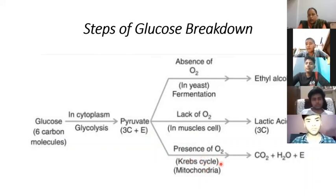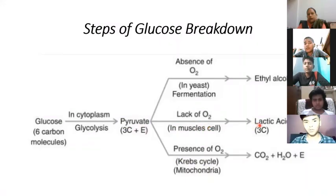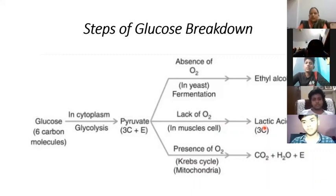In anaerobic respiration, when we do vigorous activity like exercising, our muscles convert pyruvate into lactic acid inside the muscle cells.